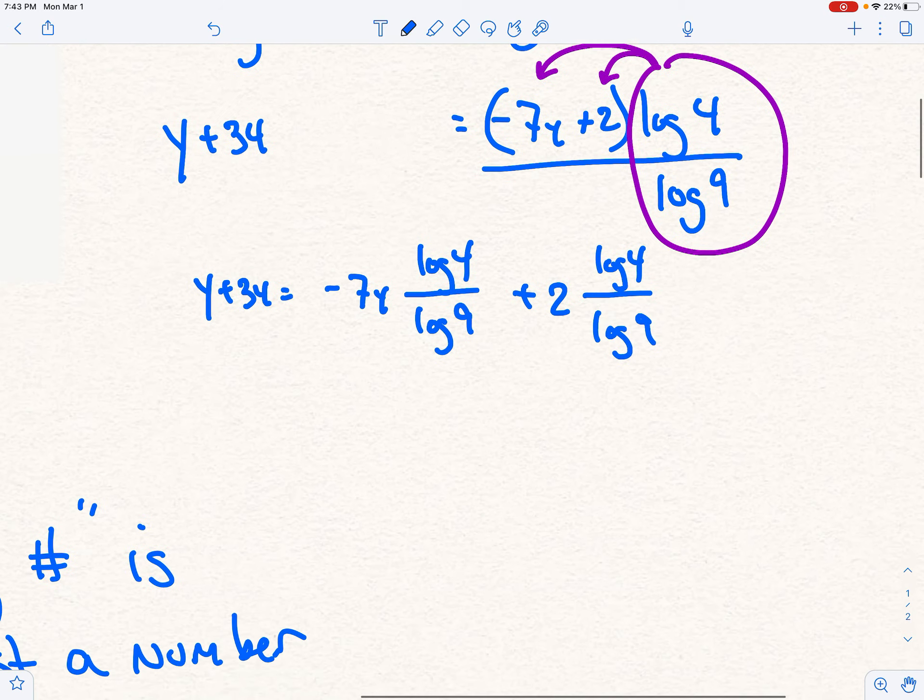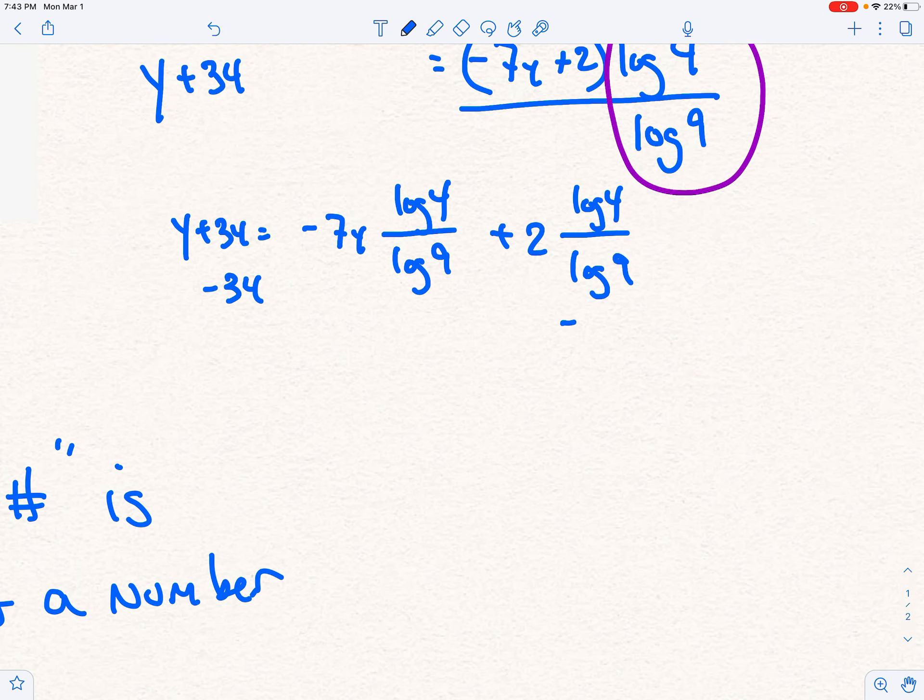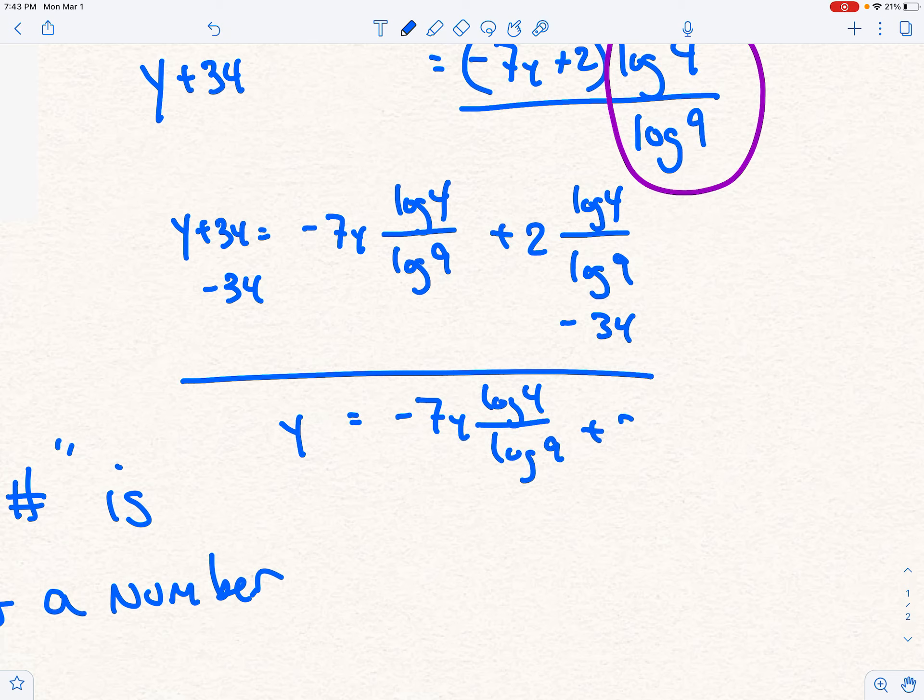Now let's maneuver around a little bit. I'm going to take the 34 off of both sides. So I have y equals negative 7y log of 4 over log of 9 plus 2 log of 4 over log of 9 minus 34.